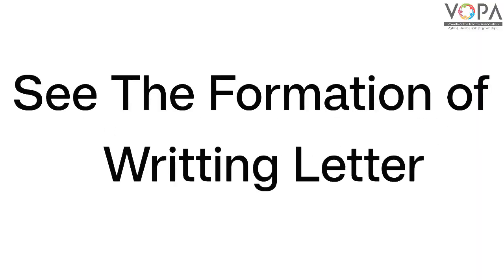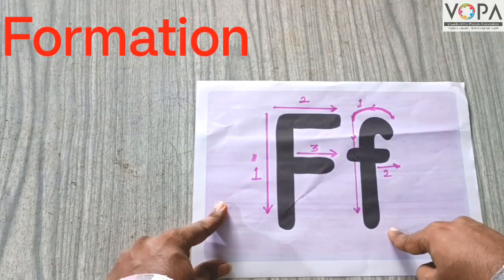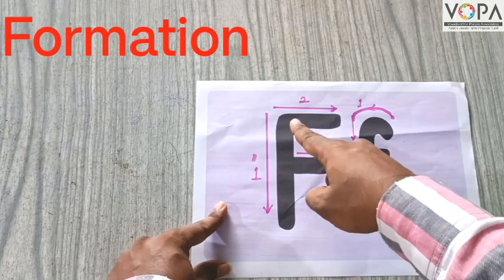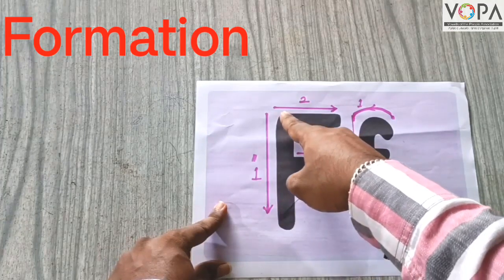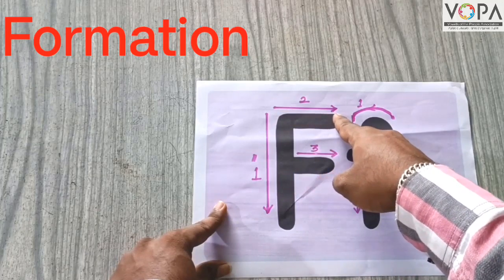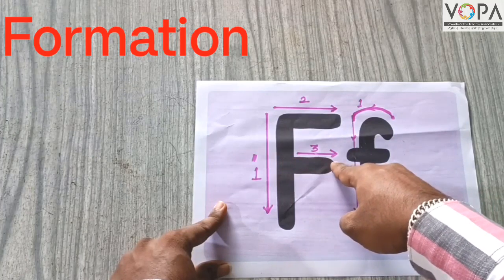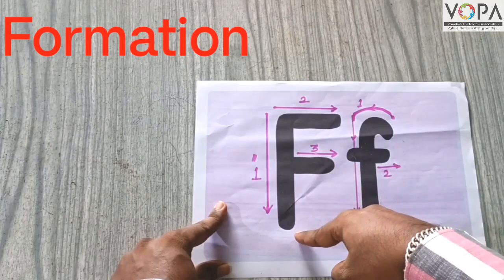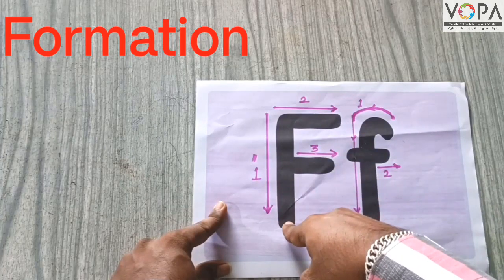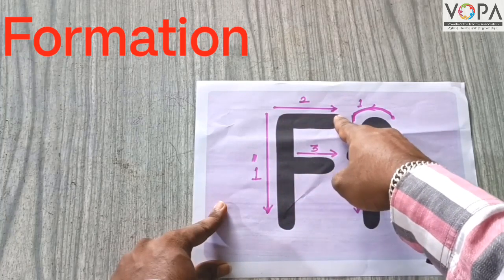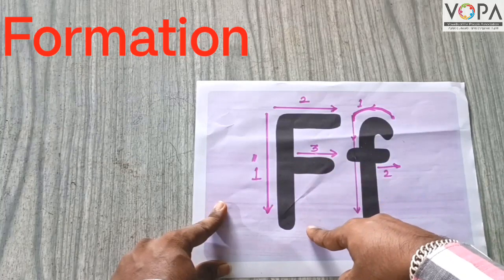See the formation of writing letter F. This is capital F and this is small F. Capital F: the first is a standing line, then a long sleeping line, and then a short sleeping line. This is capital F.